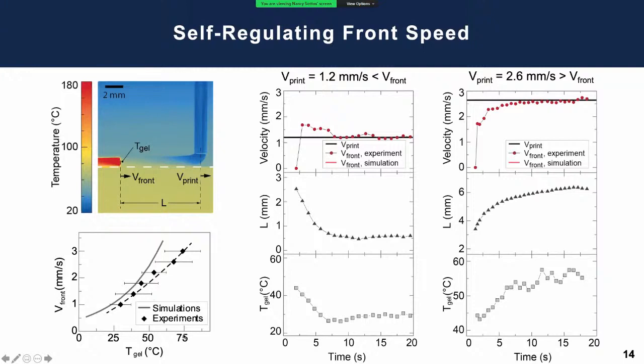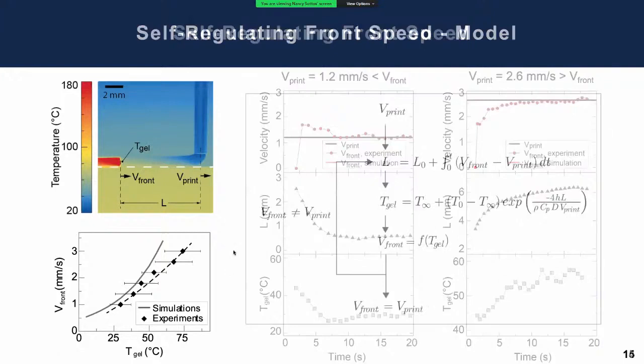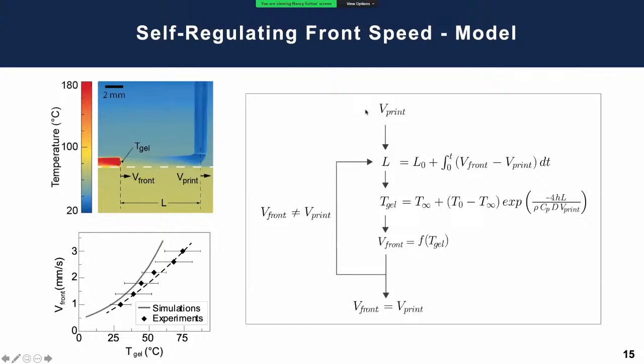Likewise, if I go faster, if I increase the print speed, say to 2.6 mm/s in this case, that is greater than the front speed at this temperature. What you see in the top plot is the velocity of the front will continue to meet and equilibrate or regulate to the print speed. Likewise I show what's going on with the length of this uncured spar L - it also hits and equilibrates, as well as the temperature of the gel. The reason we can get this kind of self-regulating response is because the front speed itself depends on the temperature of the gel. If the... let me show this in a way: it monotonically increases with gel temperature. You can think we've modeled this as somewhat of a feedback loop with the help of the Geubelle group.